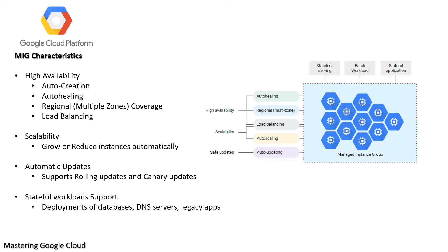Automatic updates: You can safely deploy new versions of software to instances in your MIG using the MIG automatic updater, supporting a flexible range of rollout scenarios such as rolling updates and canary updates. You can control the speed and scope of deployment as well as the level of disruption to your service. Stateful workload support: You can deploy stateful workloads such as databases, DNS servers, legacy monolithic applications, or long running batch computations with checkpoints.